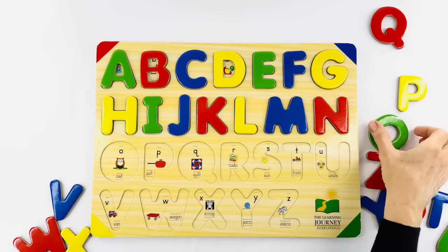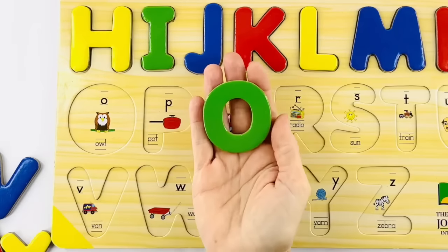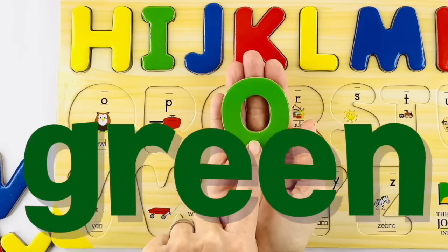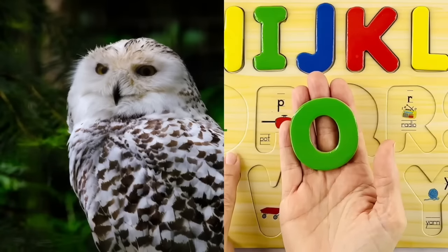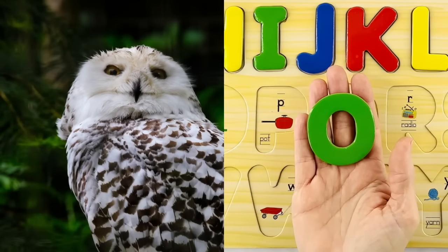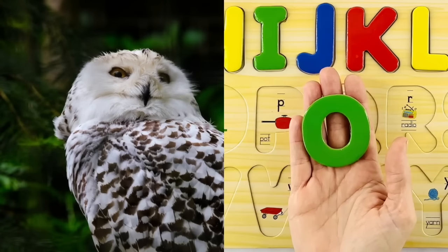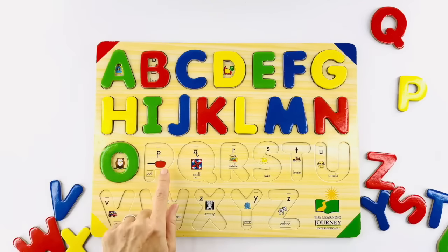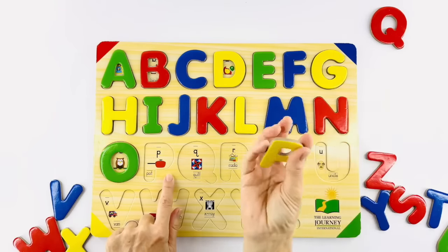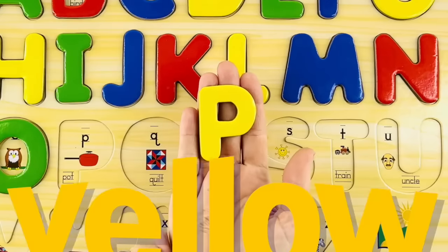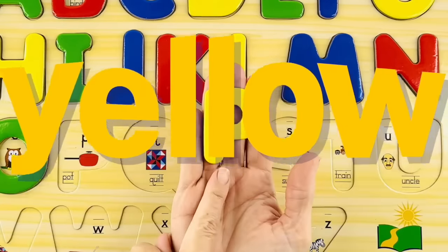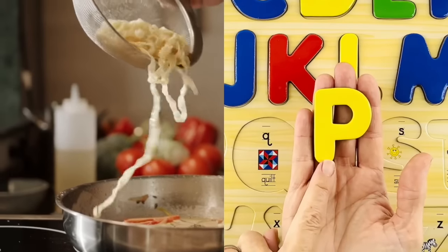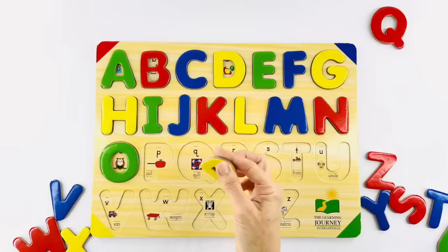Here we have the letter O — this letter O is green. Did you know that owl starts with an O? Do you know what an owl says? Hoo, hoo — right. Here we have the letter P — this P is yellow. A word like pot or pan starts with the letter P. Puh, pan.